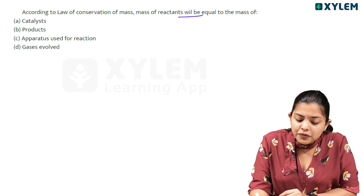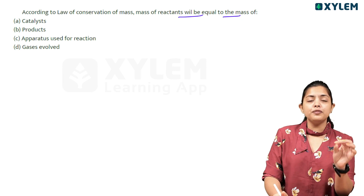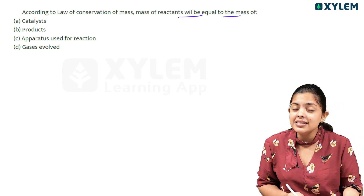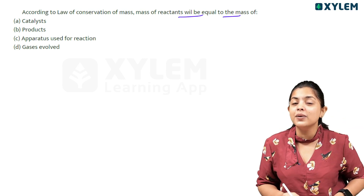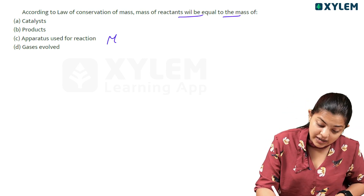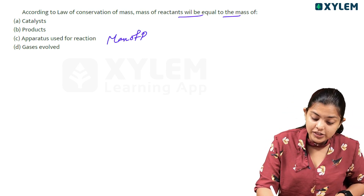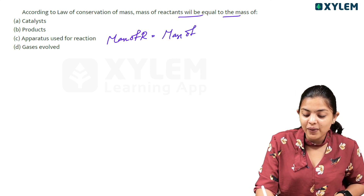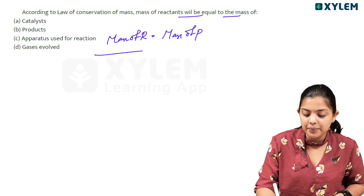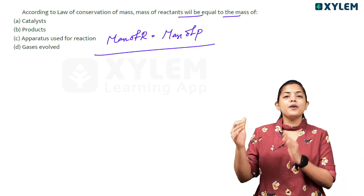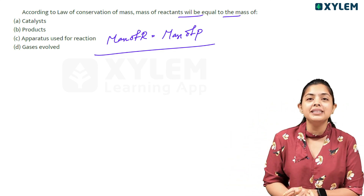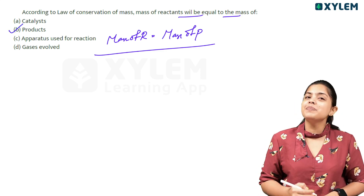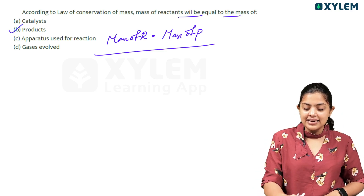Next question: according to the law of conservation of mass, mass of reactants will be equal to the mass of what? If we apply the law of conservation of mass, mass of reactants is equal to mass of products. So option B is the correct answer.